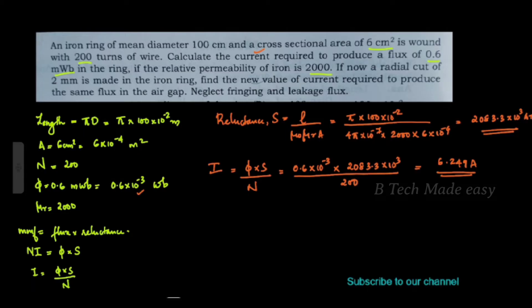This is the first part solved. Now for the second part: a radial cut of 2 mm is made in the iron ring, producing a 2 mm air gap. Find the new value of current required to produce the same flux in the air gap.